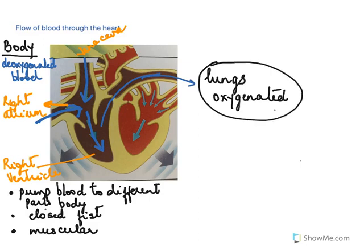After being oxygenated in the lungs, the blood returns back to the heart through the pulmonary vein. It then enters the left atrium, travels to the left ventricle, and from the left ventricle through the aorta it goes out to the different parts of the body.